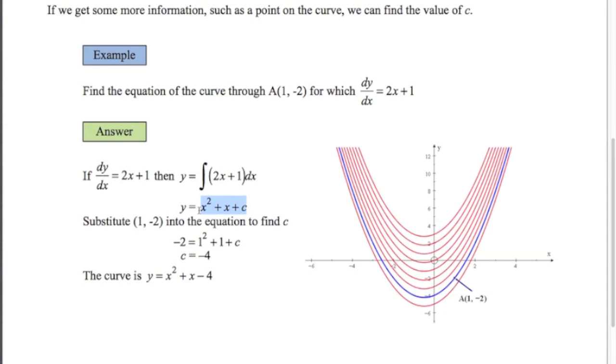So I know that this is the equation of the curve. You can see a whole family of them over here, x squared plus x plus different values of c. Now I'm given that the point a is on this curve, one minus two. So all I need to do is substitute x is one and y is minus two, and then I'll be able to find the value of c. So here c is minus four. So there's the equation of the curve.